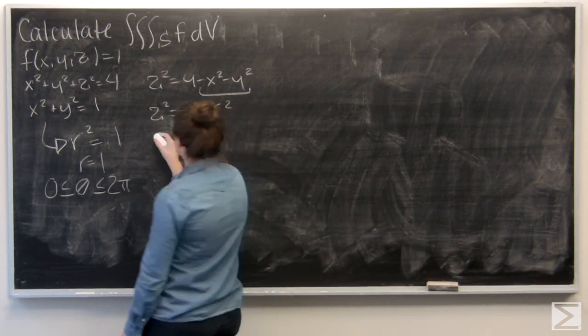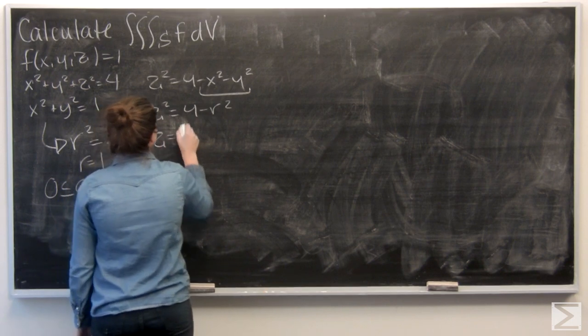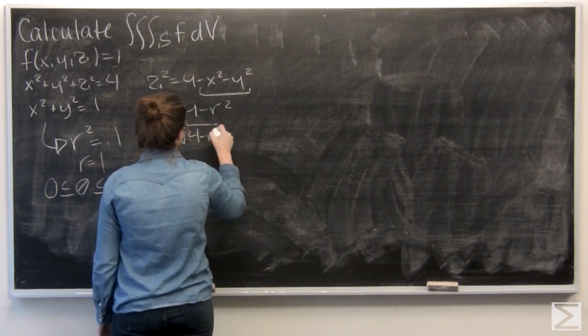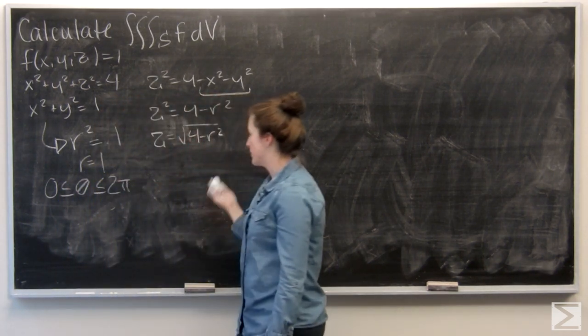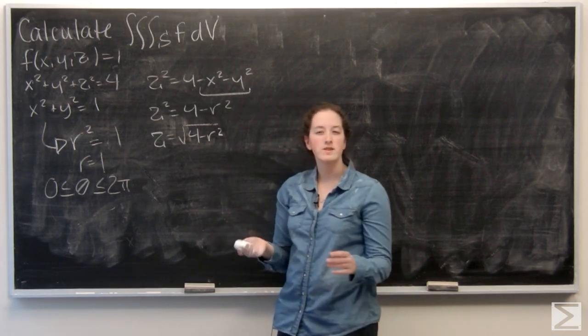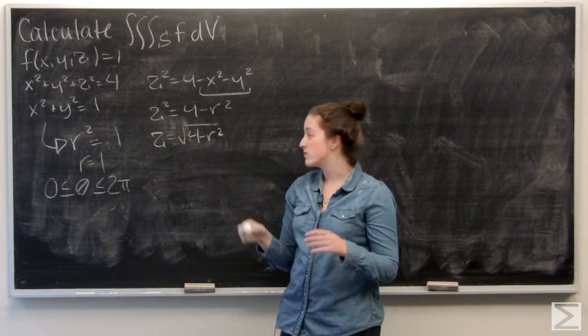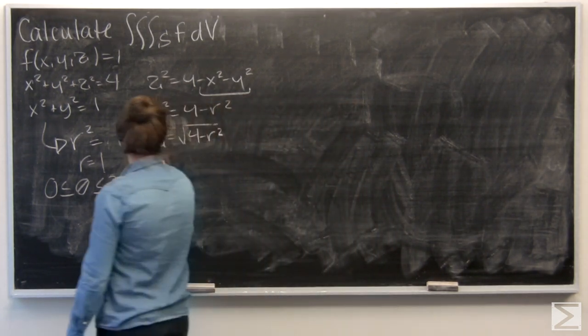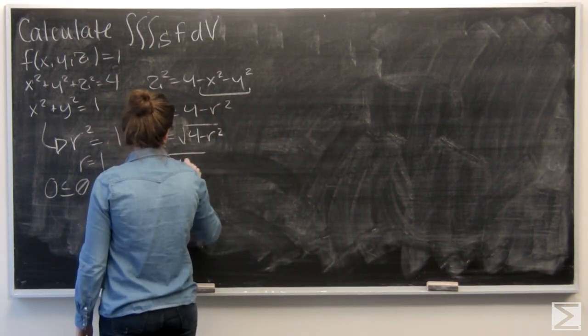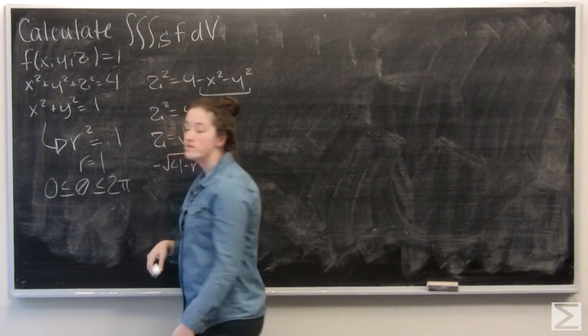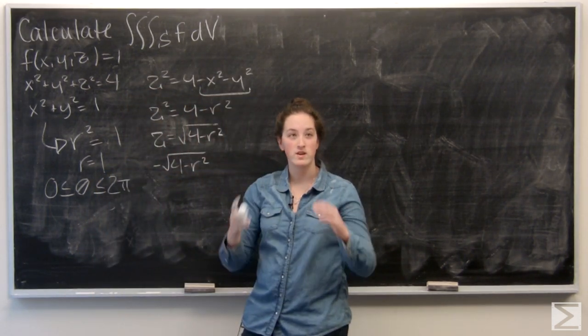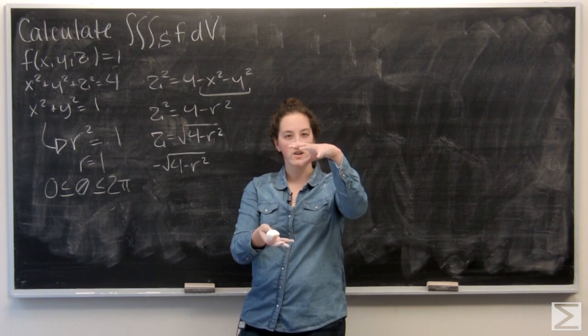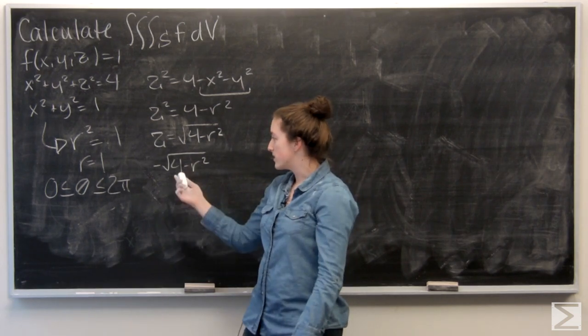Take the square root, and I'm going to get just z as the square root of 4 minus r squared. So it's important to keep in mind here that that square root really only covers the top hemisphere. So I'm also going to need a lower bound of negative square root of 4 minus r squared so that I can get the whole sphere in there. So now I have all my bounds, and I'm ready to start.